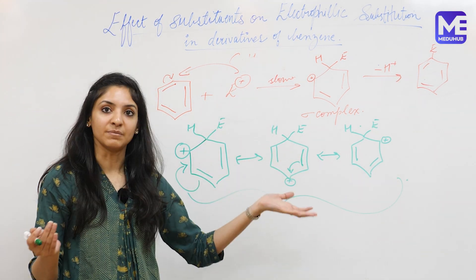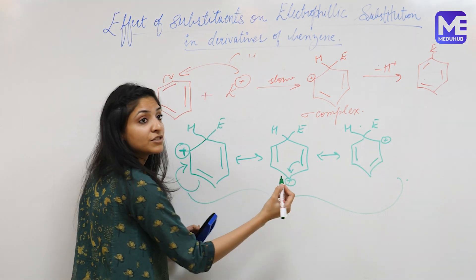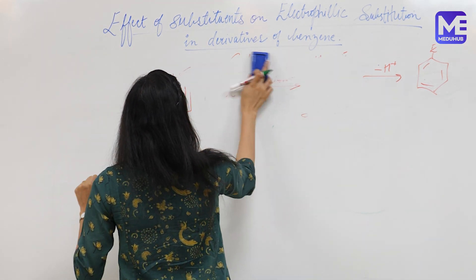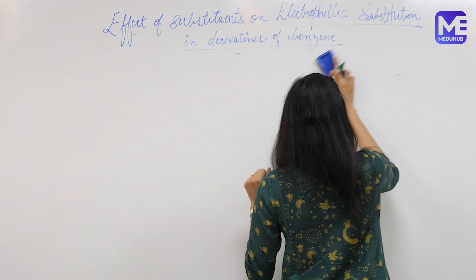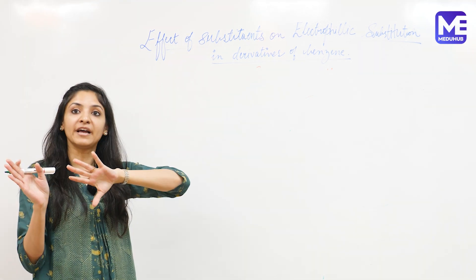Importantly, in the sigma complex there is a positive charge on the two ortho positions and the para position. Now we need to see what happens when one group is already present on benzene. When just benzene reacts, one product is formed because all carbon atoms are equivalent. But when benzene already has a substituent, there are two possibilities: either ortho or para isomers form, or meta isomers form. The electron displacement effects of these groups determine whether the product is ortho/para or meta.